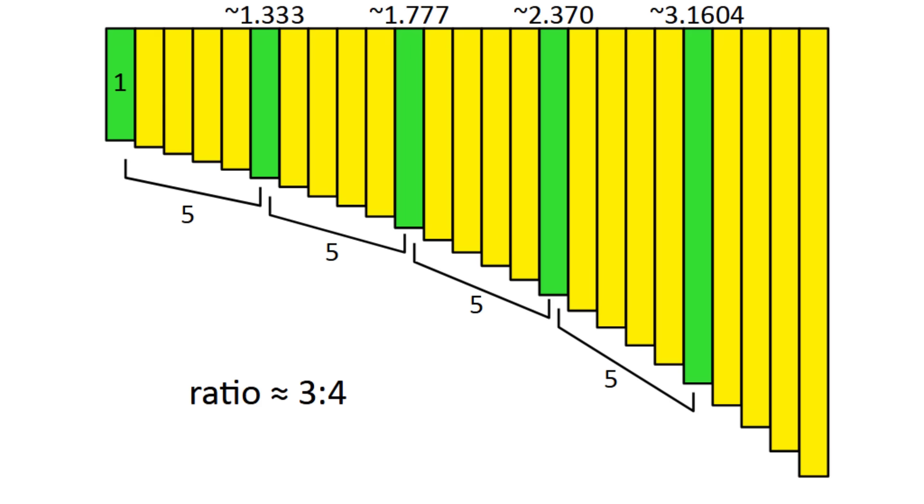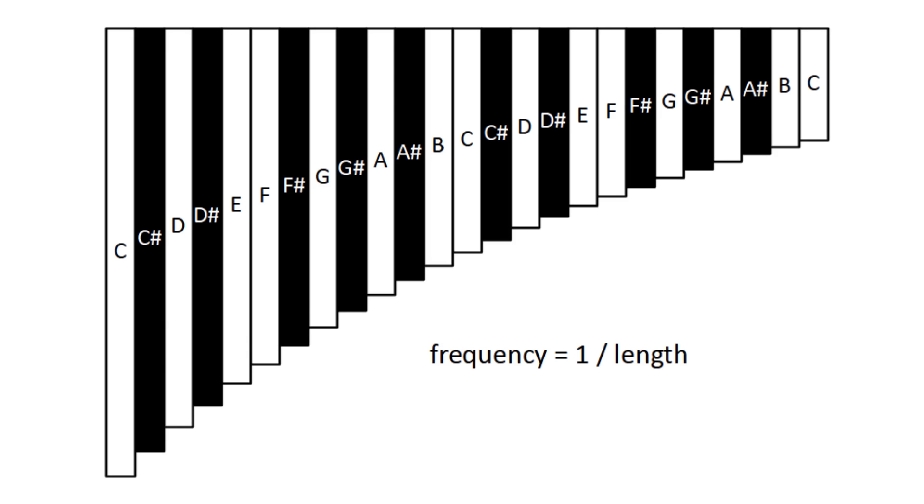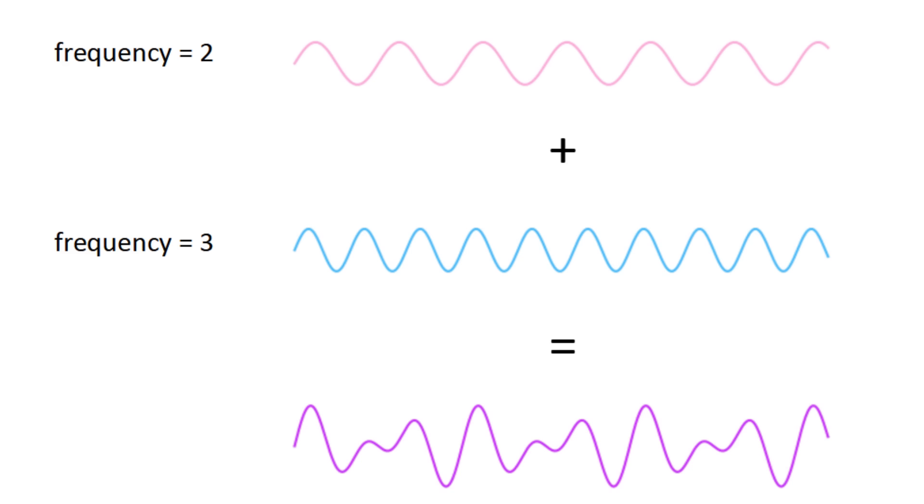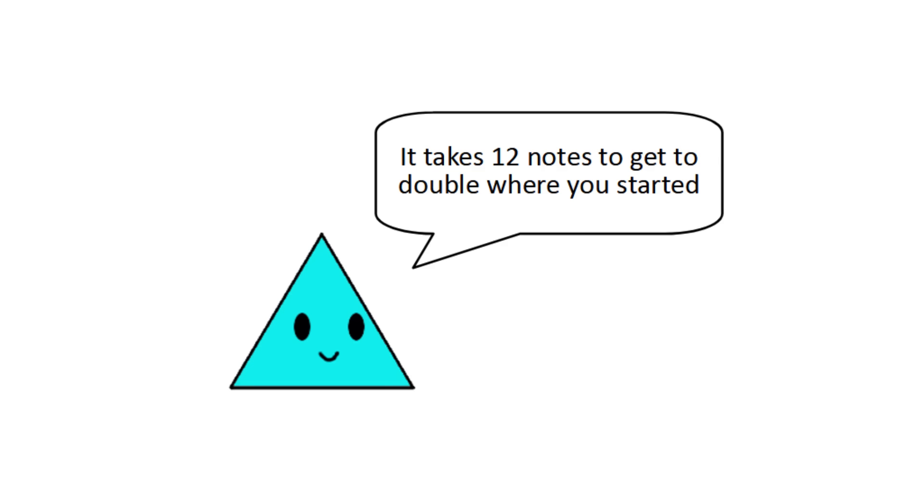If you make an instrument where the notes have these frequencies, then the approximately whole number ratios cause the notes to combine in cool ways, so this mathematical coincidence is why we have 12 notes.